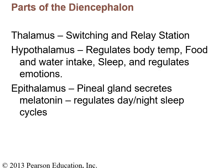The diencephalon is in the very middle of the brain, connecting the cerebrum to the brain stem. It has three parts: the thalamus, which acts as the switching and relay station for sensory information; the hypothalamus, which regulates body temperature, hunger, thirst, sleep, and emotions; and the epithalamus, which contains the pineal gland that secretes melatonin to regulate day-night sleep cycles.